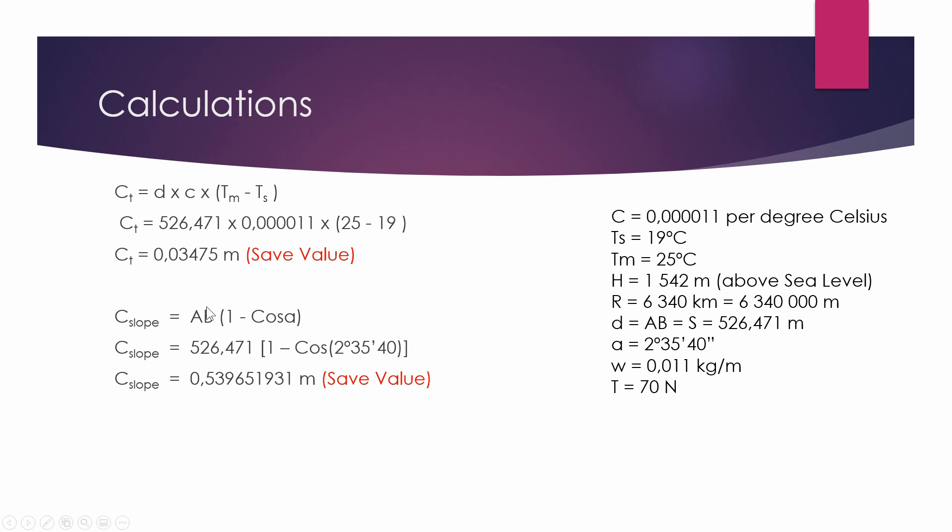For our slope, we have AB, which is again the same, that 526, and then 1 minus our degrees, minutes and seconds. And you save that value into your calculator.